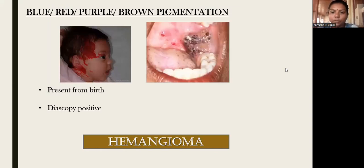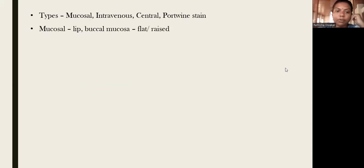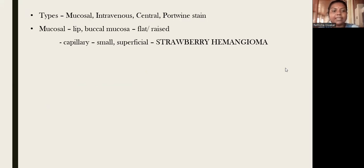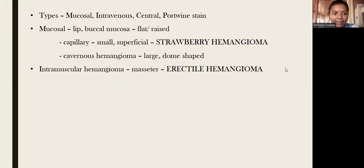Hemangioma is a vascular lesion present from birth. There will be multiple red-purple lesions in the oral cavity. There are different types: mucosal, intramuscular, central, and port-wine stain. Mucosal hemangioma is mainly seen in the lip and buccal mucosa, sometimes as a flat lesion and sometimes raised. Mucosal hemangioma is classified into capillary hemangioma (also known as strawberry hemangioma, which is small and superficial) and cavernous hemangioma, which is large and dome-shaped.